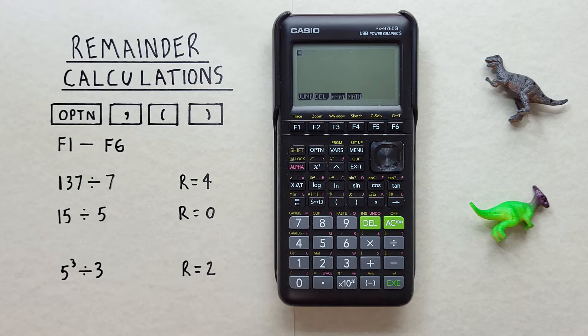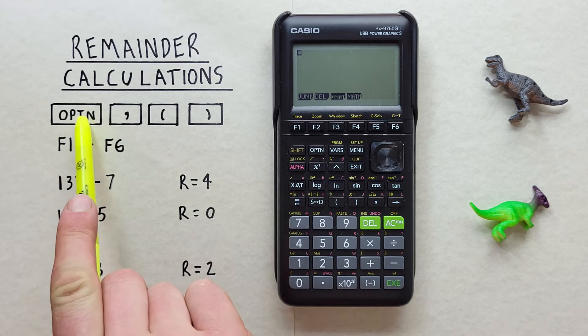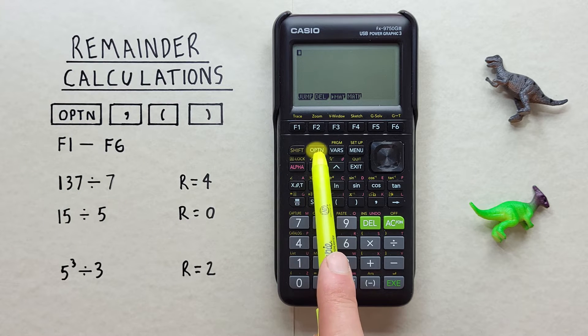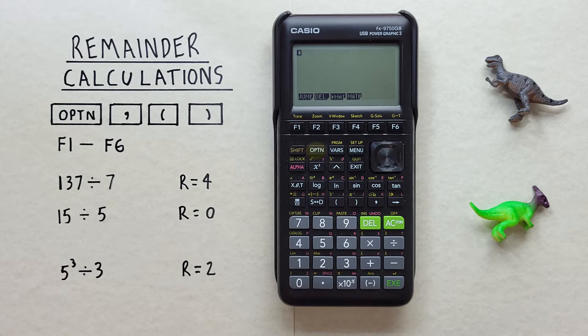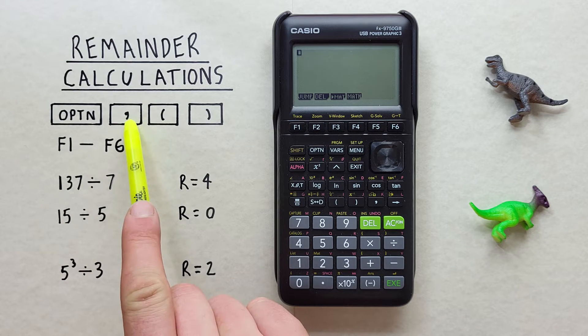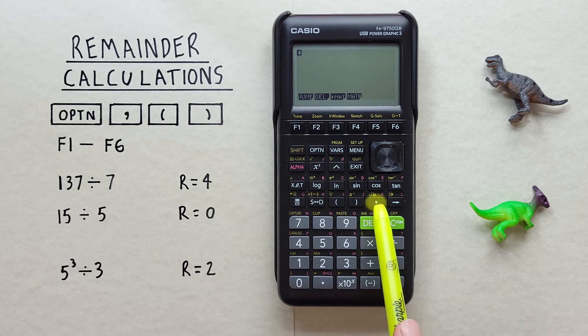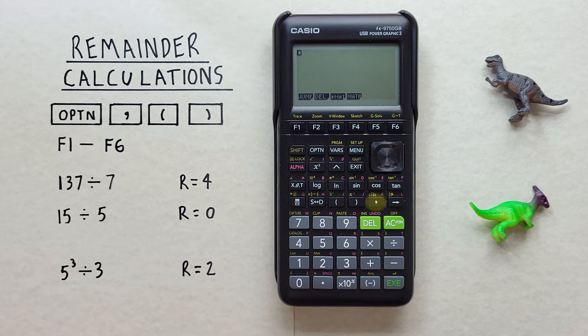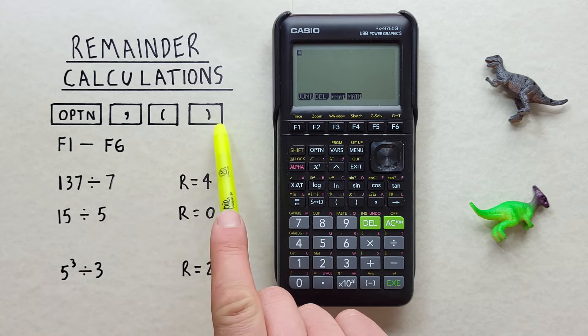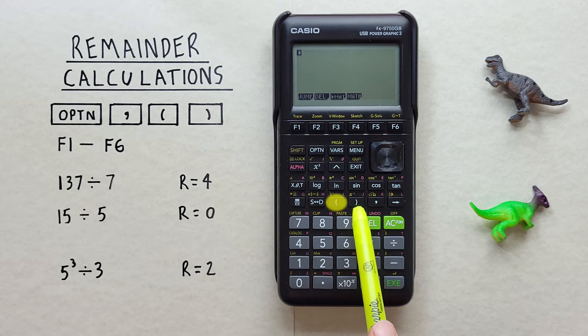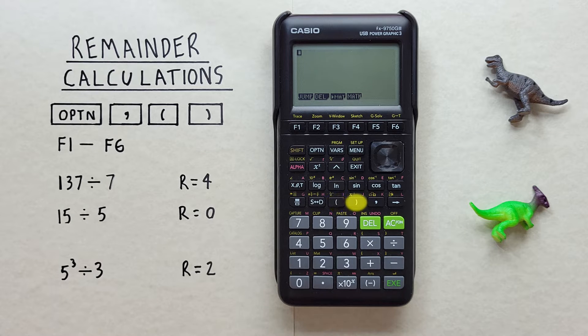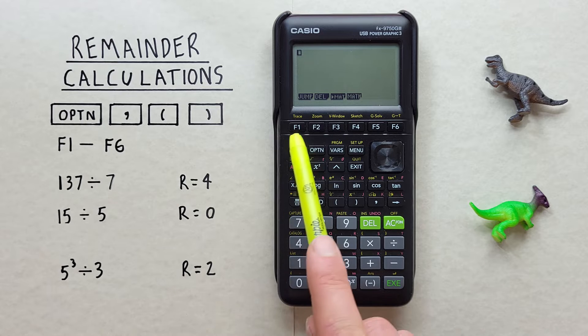To do this we'll use the Option key located here, the Comma key located here, the Bracket keys located here, and the F1 through F6 function keys located across the top here.